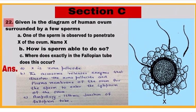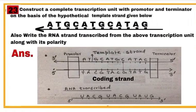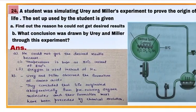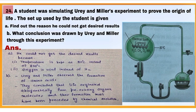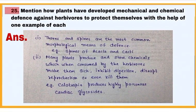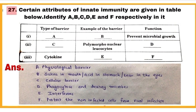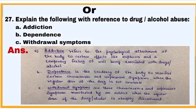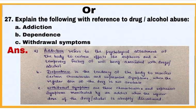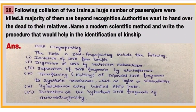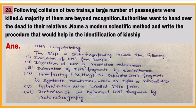Next, Section C. This section has 7 questions of 3 marks each. These are question numbers 22, 23, 24, 25, 26, and 27. There is a choice in question number 27, and this is question number 28 of Section C.